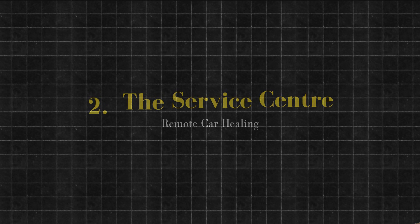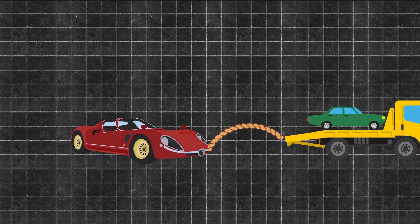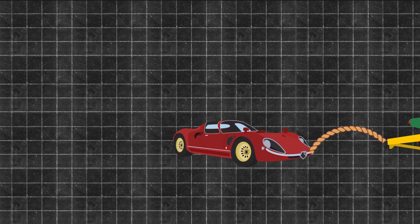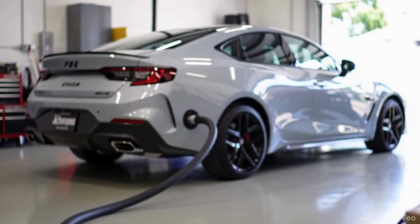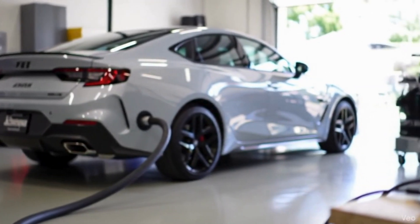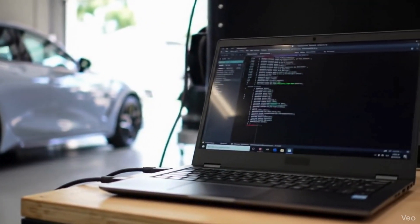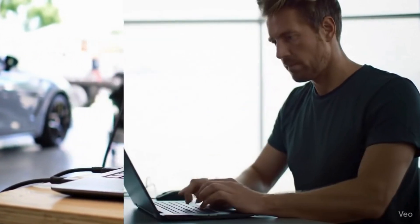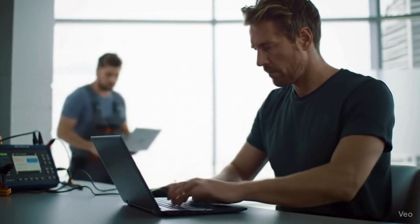Fast forward two years: that same EV has a bug in the infotainment system. Instead of towing the car or opening the dashboard, a remote technician logs in and runs diagnostics from 500 miles away. It's like tech support for your car over IP — the same way your IT guy fixes your office laptop, mechanics now troubleshoot Teslas or BMWs remotely.